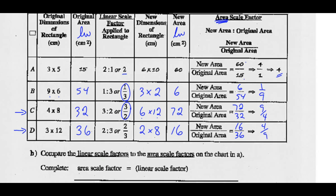Rectangle D: area is 3 times 12, or 36 square centimeters. Scale factor of 2 thirds: 2 thirds of 3 is 2, and 2 thirds of 12 is 8. 2 times 8 gives us an area of 16. New area is 16 over 36 — divide both by 4 and you get 4 ninths.